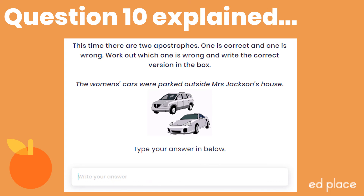This is a great question that will really test your understanding of possessive apostrophes — you have to work out which one is wrong and then correct it. Using the thumb rule: if I cover the apostrophe in 'women's' with my thumb, it tells me the cars belong to 'women's', which doesn't make sense. The plural of 'woman' is 'women', which is irregular, so I should add an apostrophe S. The correct answer is 'women's' with an apostrophe S at the end.